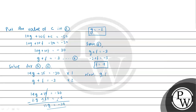Now we put the values of g, f, and c into equation 1. We get x² + y² - 4x - 2y - 20 = 0. The center is at (-g, -f) = (2, 1). The radius is √(g² + f² - c) = √(4 + 1 + 20) = √25 = 5.